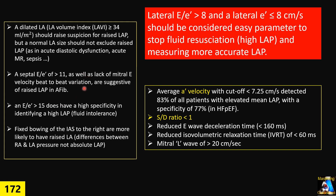Another parameter we can use is A-prime velocity. If the average A-prime velocity is less than 7.25 centimeters per second, it means over 80% of patients have high mean left atrial pressure, especially in those with preserved ejection fraction. Another factor is the S to D ratio: if it is less than 1, it is strongly suspicious for elevated left atrial pressure.